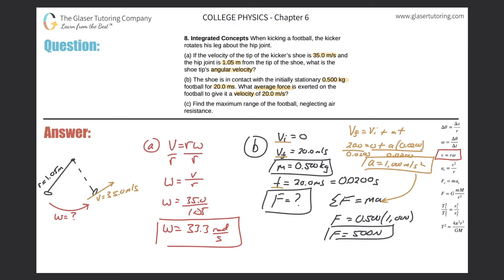Let's read over the question. It says find the maximum range of the football, neglecting air resistance. To find maximum range, we have to remember that the maximum range of any projectile is always going to be at 45 degrees. That is the angle that will achieve maximum range.